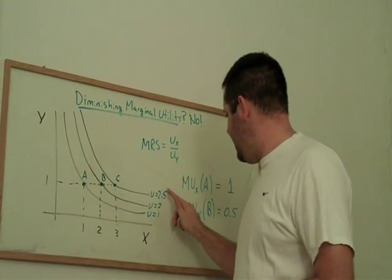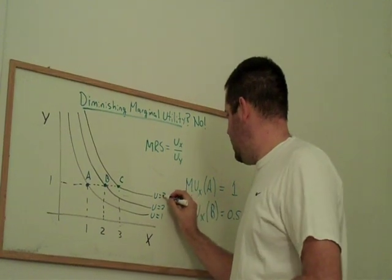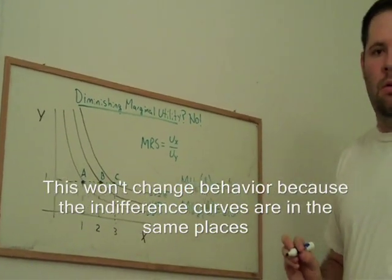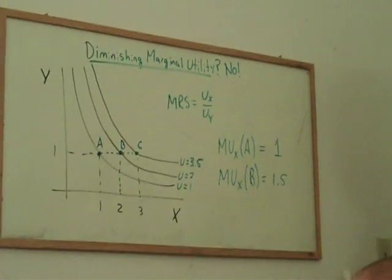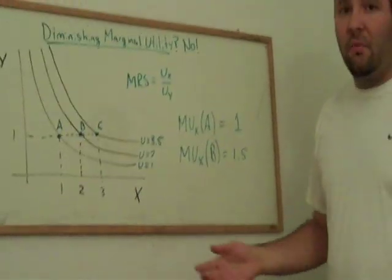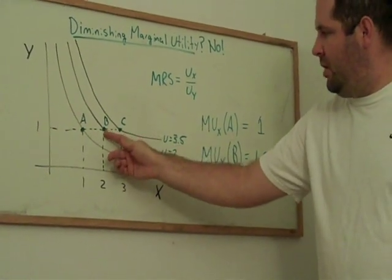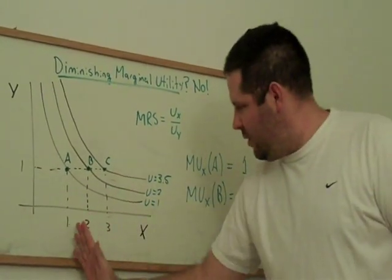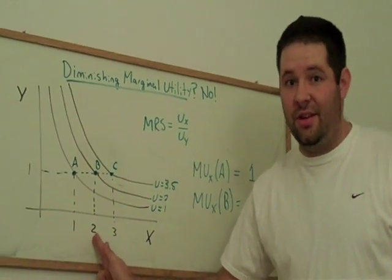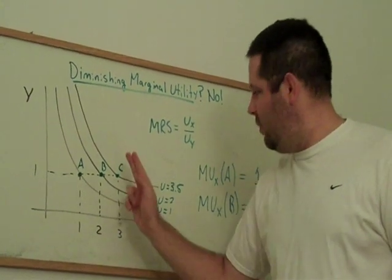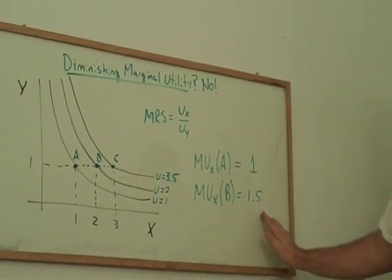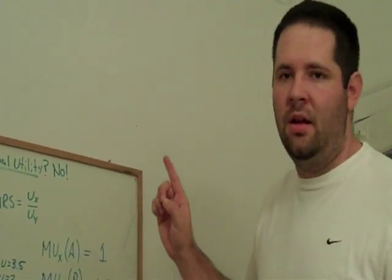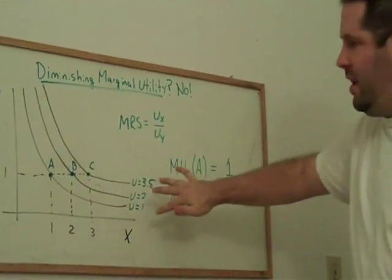What if instead of the third curve being labeled 2.5, it was 3.5? If it's 3.5, then the marginal utility between bundle B and bundle C would be 1.5 instead of 0.5. As we increased x from 1 to 2 the marginal utility was 1, but as we increased x from 2 to 3 it was even bigger at 1.5. Notice that is increasing marginal utility — yet it's consistent with diminishing marginal rate of substitution.